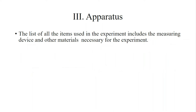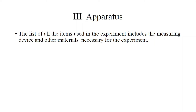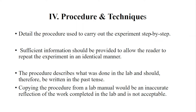The third section is Apparatus, Materials, and Chemicals. Here you list the apparatus, materials, or chemicals that you used to perform the experiment — at least the name of each apparatus and the names of the chemicals.